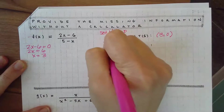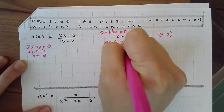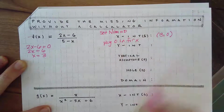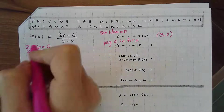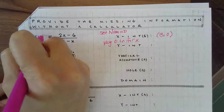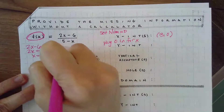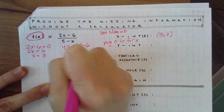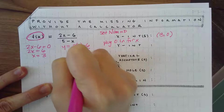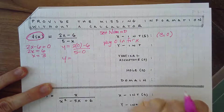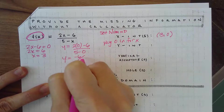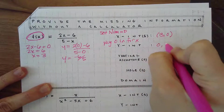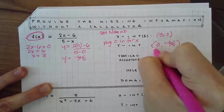The y-intercept: you're going to plug zero in for x and solve. So my y-intercept — plug zero in for x. We can think of f(x) as y. If I plug zero in for x, I get 2 times zero minus 6 over 5 minus zero. So I get zero minus six over five minus zero is five. I get a y-intercept of negative six-fifths, and we're going to write it as a point.